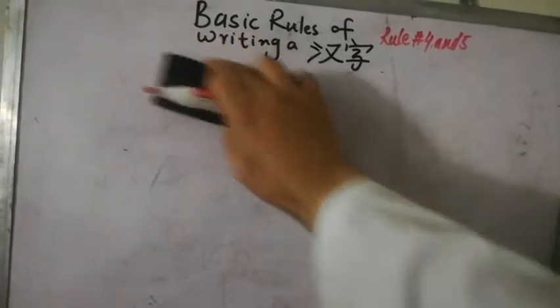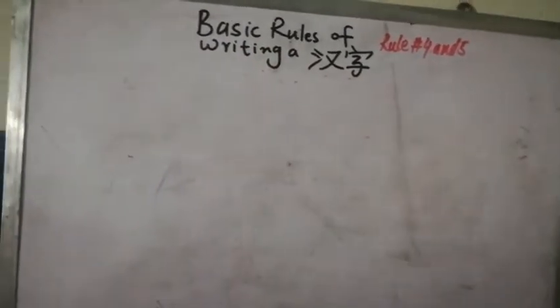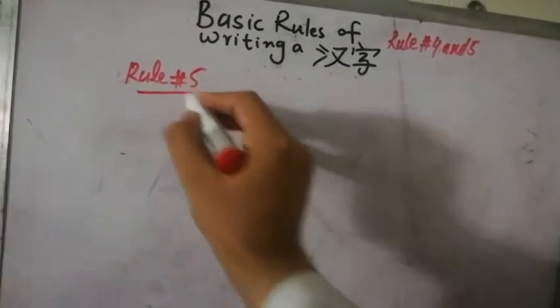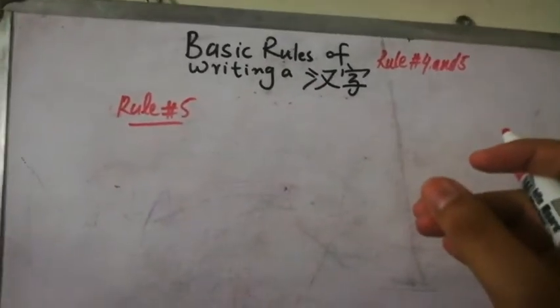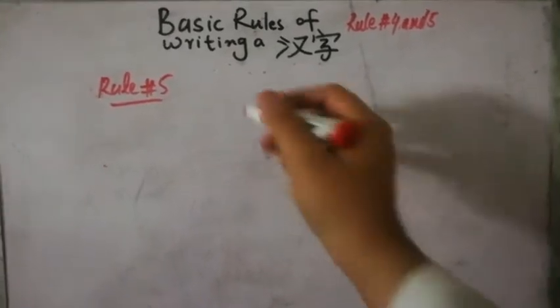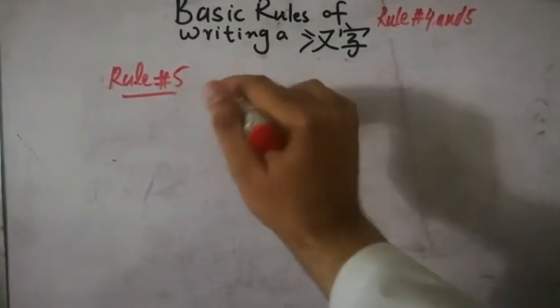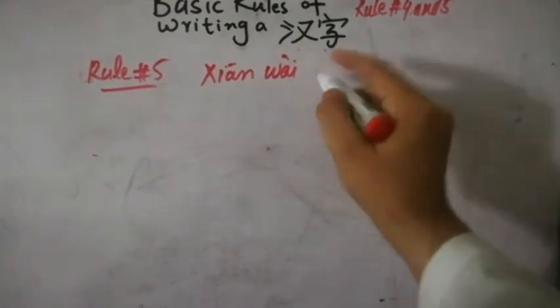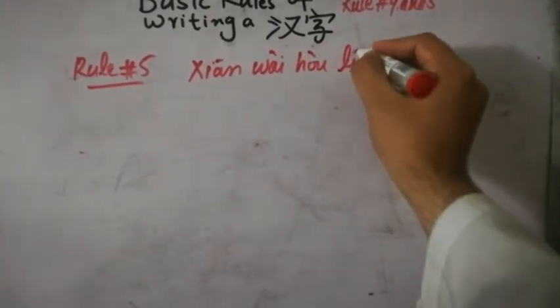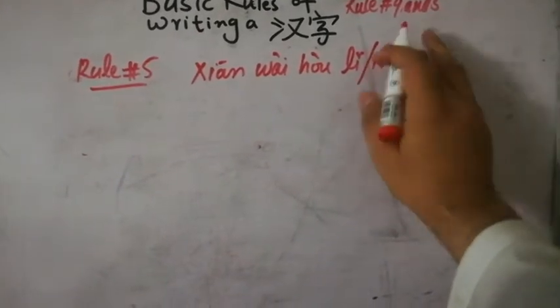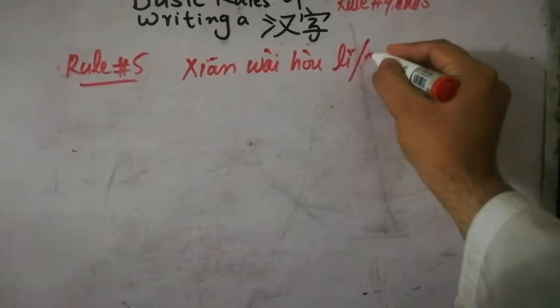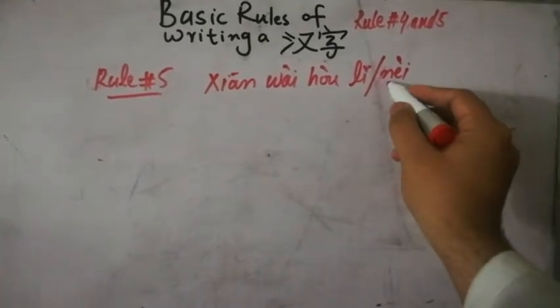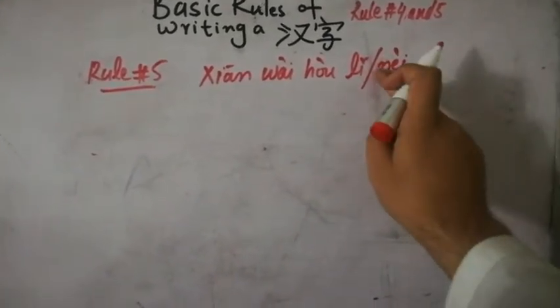We will discuss rule number five. So what does rule number five tell us? It says to us that in some books they have written xiān wài hòu lǐ, and in some books nèi lǐ and nèi. In the book of HSK1 they have written it xiān wài hòu nèi.